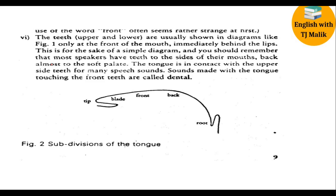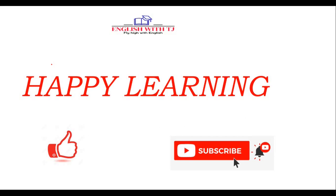The sixth articulator is the teeth — upper and lower — usually shown in diagrams for simplicity. Most speakers have teeth to the sides of their mouth, back almost to the soft palate. The tongue is in contact with the upper side teeth for many speech sounds. Sounds made with the tongue touching the front teeth are called dental sounds.